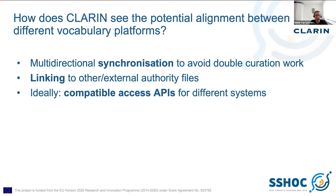How do we see potential alignment between the different vocabulary platforms? I think there should be room for multi-directional synchronization to avoid double curation work. There should be possibilities for linking to external authority files rather than having to redefine something within your system. And ideally, something like compatible access APIs for different systems — I think that would definitely help solve a lot of the potential issues.